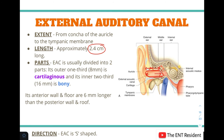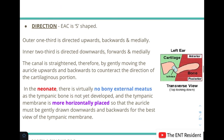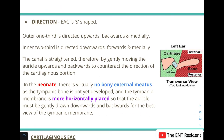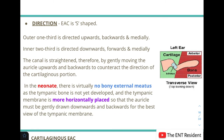The anterior wall and floor are actually six millimeters longer than the posterior wall and roof of the EAC. The EAC is not a straight canal — it is S-shaped. The cartilaginous part is directed upwards, backwards, and medially, whereas the bony portion is directed downwards, forwards, and medially.